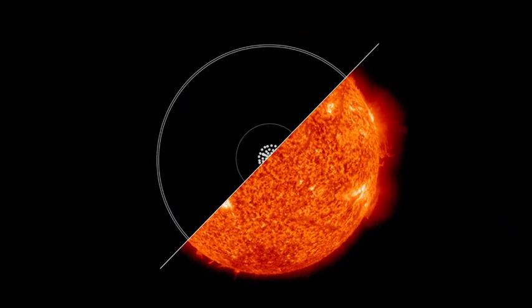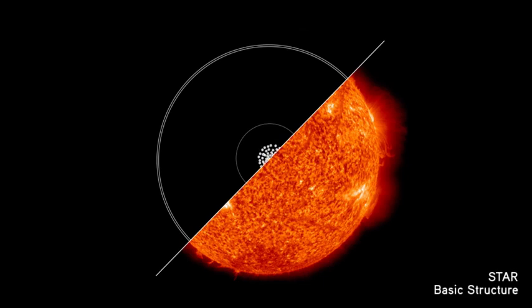Stars increase the complexity of the universe in another way. They gave it new types of structure at many different scales, from the level of the stars themselves to galaxies to superclusters. Stars themselves have a very clear structure. At the center, you've got protons at an extremely high temperature, fusing to form helium nuclei.